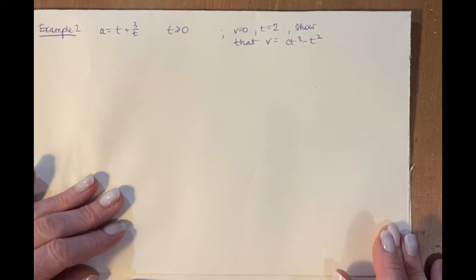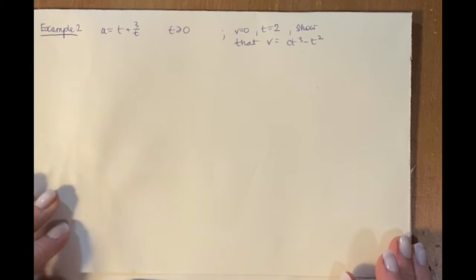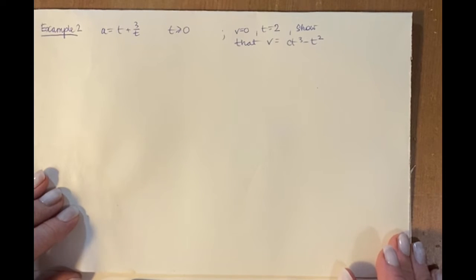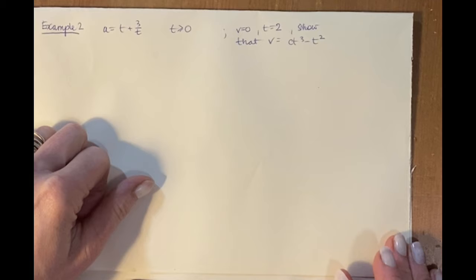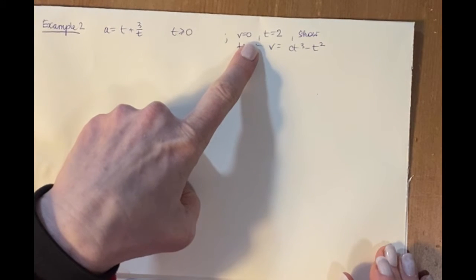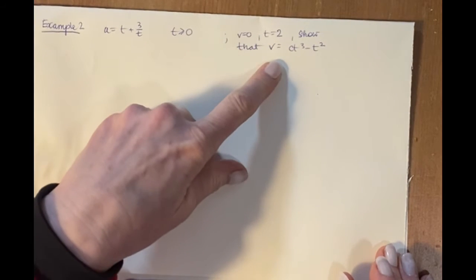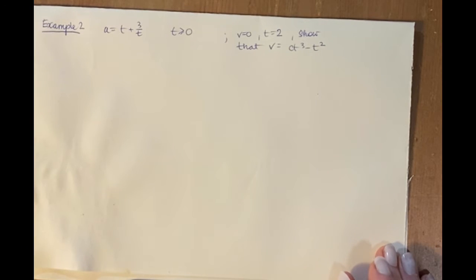Example 2 is another kinematics application. A particle P moves along a straight line. At time t, the acceleration is given by a certain equation, and we are told that at t = 2, velocity = 0. We have to show that velocity equals ct³ − t².